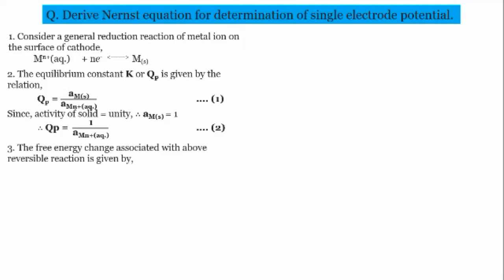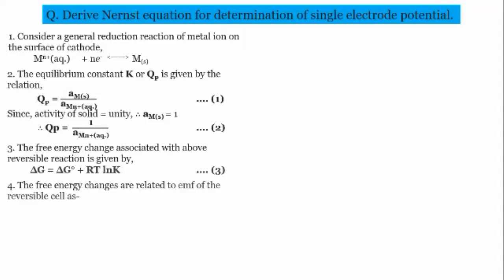The free energy change associated with the above reversible reaction is given by the equation: ΔG = ΔG° + RT ln K. This is equation number 3. The free energy changes are related to the EMF of the reversible cell: ΔG = −nFE(Mn+) for the single electrode, and ΔG° = −nFE°(Mn+). This is equation number 4.